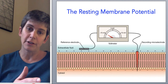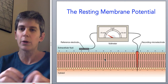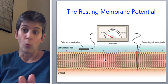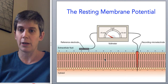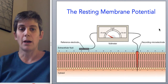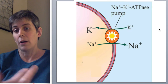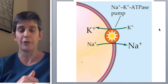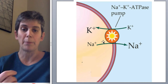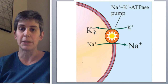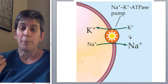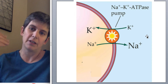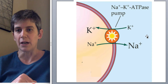We have a difference in charge maintained across the cell membrane, so we're not at equilibrium. Whenever you see a state away from equilibrium, there must be some source of energy creating that. The source of energy for the resting membrane potential is the sodium-potassium pump, which continuously pumps sodium outside the cell membrane and potassium inside by hydrolyzing ATP. So there's a continuous input of energy to create these concentration gradients.